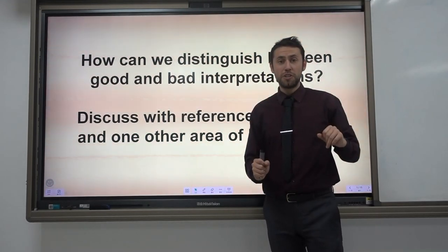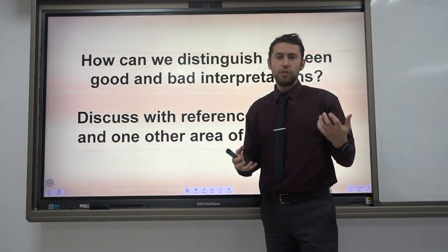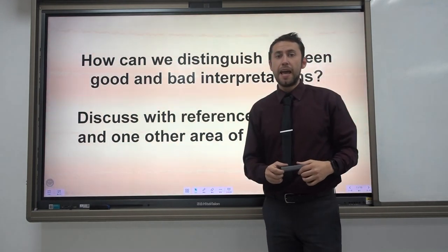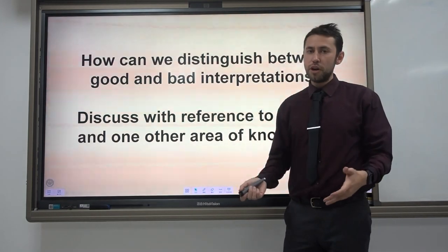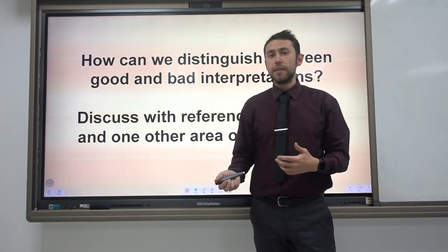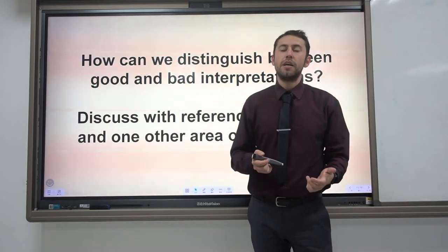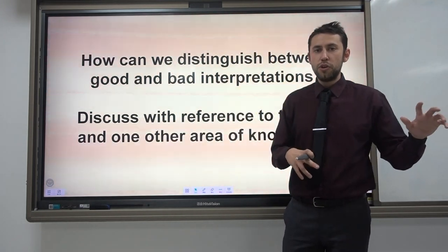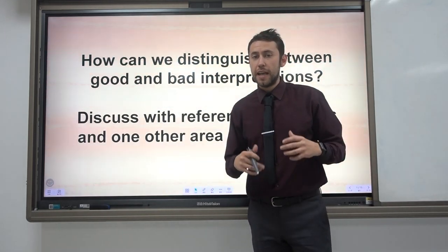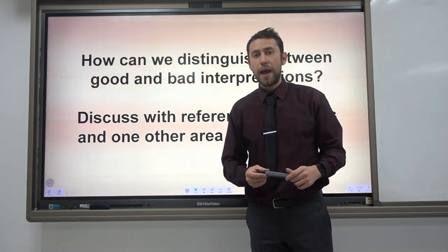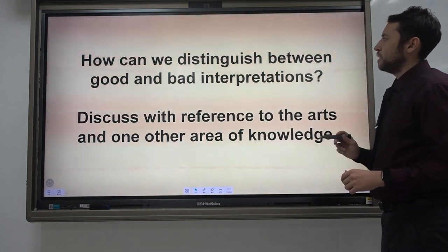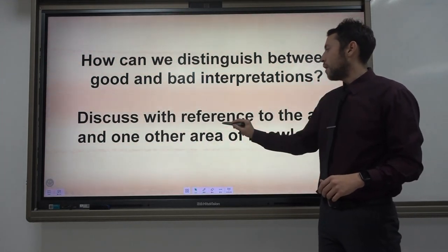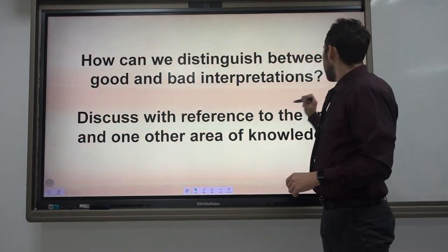Now that I have unboxed the essay title, let's start to explore some of the possible ideas that might come up in this particular essay. I'm going to go through some of the thoughts that I have had, cover a few different ideas, a few different real-life situations. And then at the end, I will summarize it all and give you some clear points that you can take away and potentially include in your essay. How can we distinguish between good and bad interpretations? Discuss with reference to the arts and one other area of knowledge.